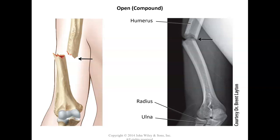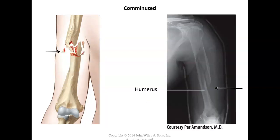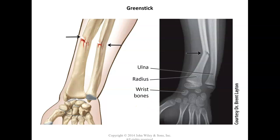Here we're looking at X-rays of actual breaks. On the right is a compound or open break in the humerus — the bone is sticking out of the skin. Next is the comminuted break, also in the humerus, where the bone compacted and crushed in the center. Then there's the greenstick break, which typically happens in children — you can tell it's a child because the growth plates and wrist bones have not yet ossified or come together.